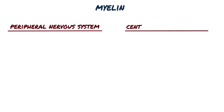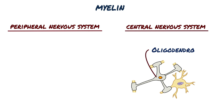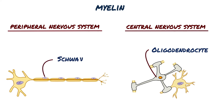Myelin is formed by different glial cells, but the particular type of glial cell responsible for myelinating axons differs in the peripheral and central nervous systems — oligodendrocytes in the central nervous system and Schwann cells in the peripheral nervous system. During development, these specialized glia wrap axons in many layers of membrane.